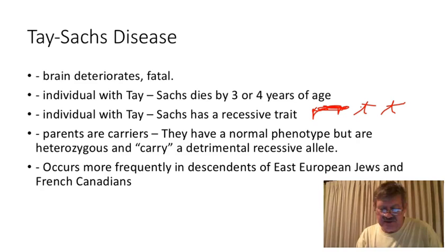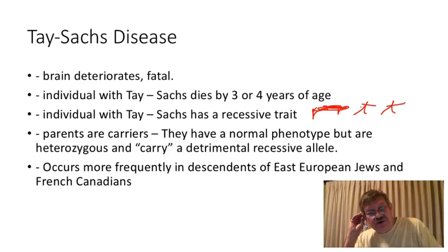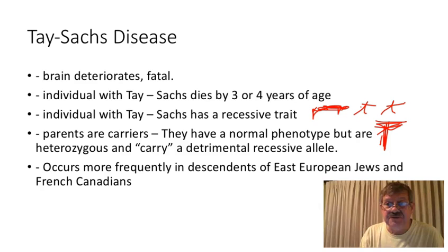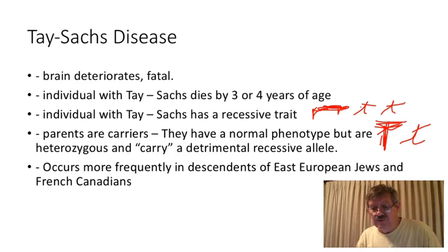The parents of this child must be carriers. A carrier is a person who is heterozygous — they have a normal phenotype but carry a detrimental recessive allele. This person has the genotype big T for the ability to produce the enzyme, and little t for a nonfunctional allele that does not code for the enzyme.